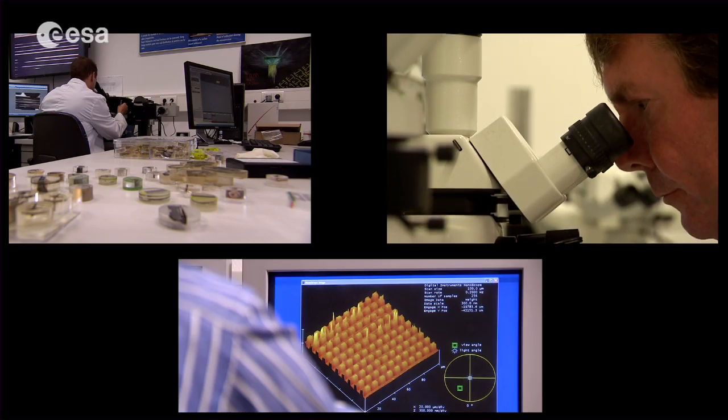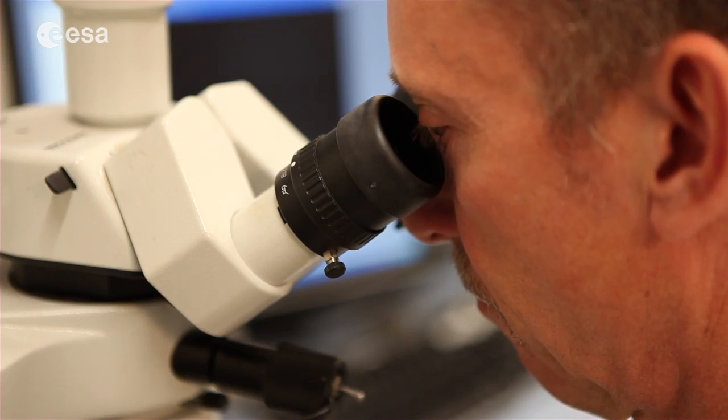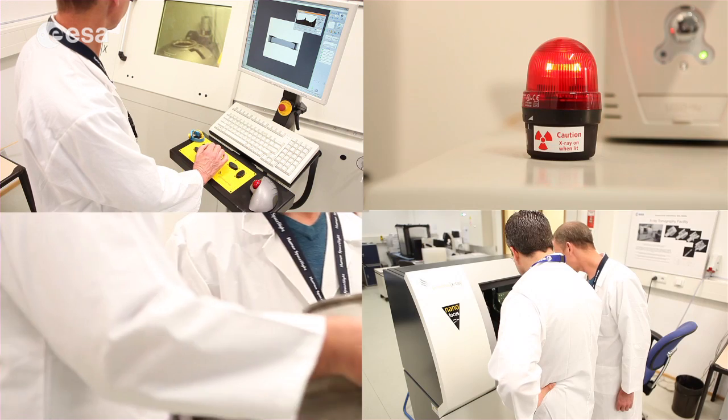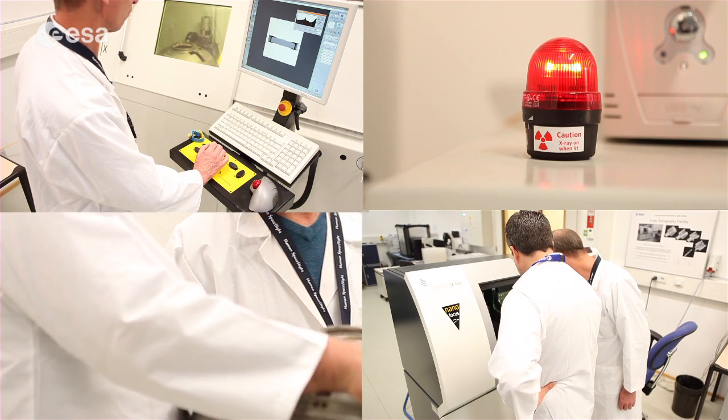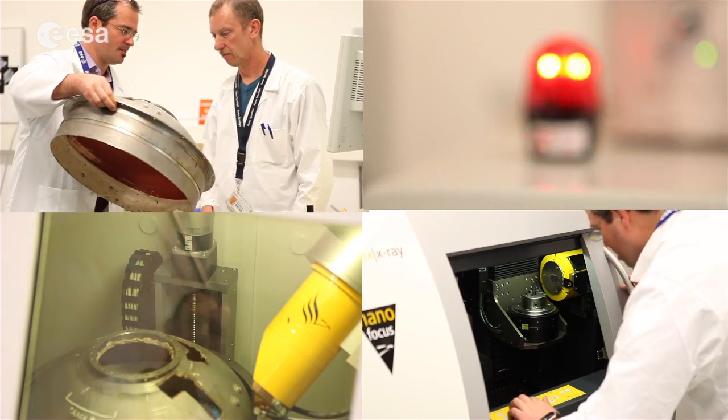We normally have an initial meeting with the laboratory personnel and we formulate an investigation procedure. First of all, we used optical microscopes, scanning electron microscopes, an energy dispersive x-ray system. Then we used x-ray tomography and microsection for metallography and looking at the microstructure.